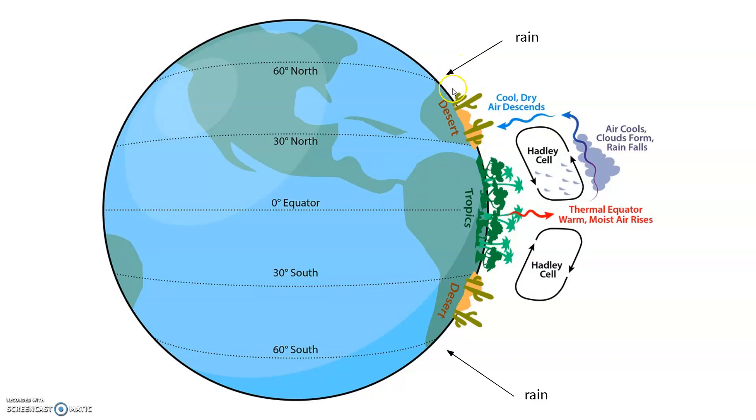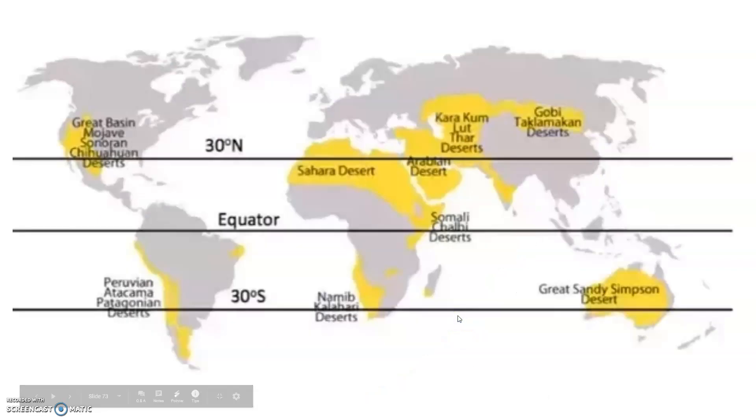I also like this picture because it shows that we have the most rain near the equator and the 60 degree latitudes. Because after all that rain has been dumped out, we have cool, dry air descending, and that's where our major deserts are, 30 degree latitudes.